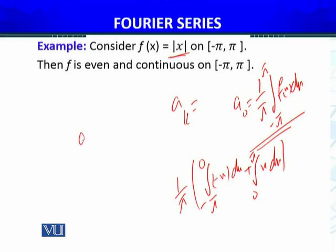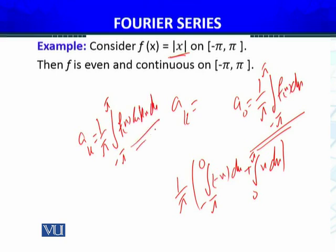In other words, for aₖ generally — besides a₀ — we also know the Fourier coefficient formula: aₖ = (1/π) ∫₋π^π f(x) cos(kx) dx. That is the formula. Using these formulas, I will determine a₀ and aₖ. Since f(x) = |x| is a piecewise function, the integral must be split from −π to 0 and from 0 to π.